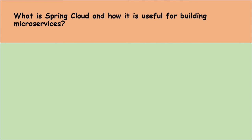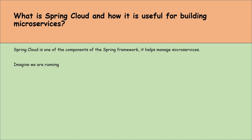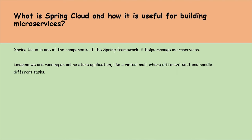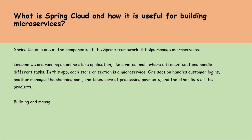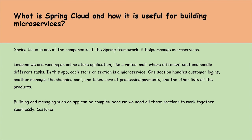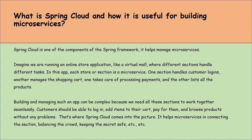What is Spring Cloud and how is it useful for building microservices? Spring Cloud is a component of the Spring framework that helps manage microservices. Imagine running an online store application where different sections handle different tasks — customer login, shopping cart, payment processing, and product listing — each being a microservice. Managing such an app is complex because all sections need to work together seamlessly. Spring Cloud helps microservices communicate, balance load, keep secrets safe, and more.